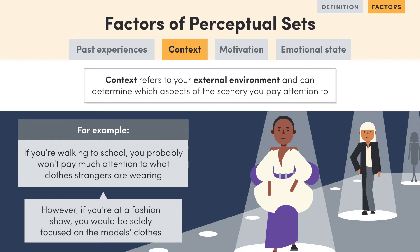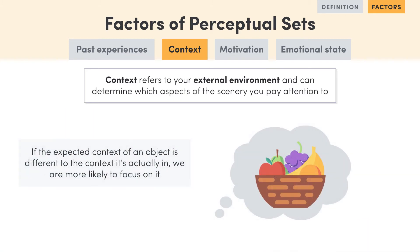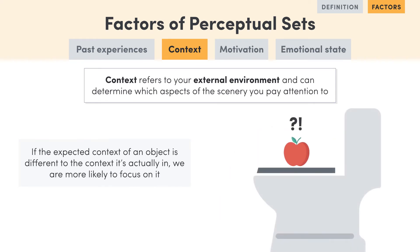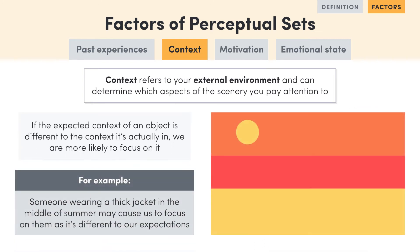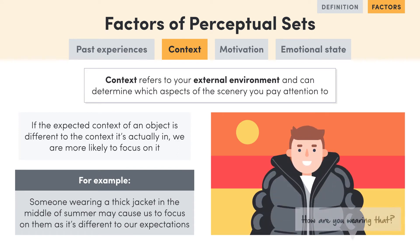On the flip side, if we expect certain things to be in one context but then we find them in a different context, it may lead us to only focus on this object, as we view it being out of place. For example, if you're walking down the street and you see someone wearing a thick jacket in the middle of summer, you may focus on this since it doesn't align with your expectations of what a person should be wearing in this context.